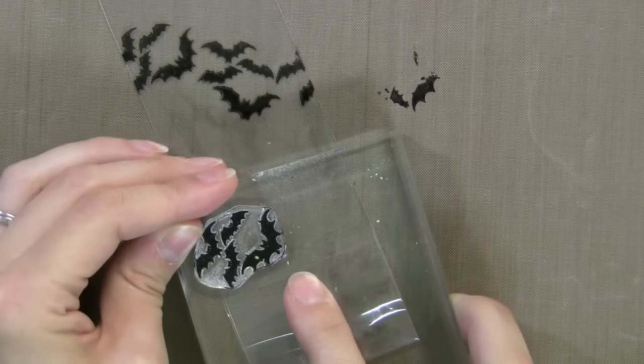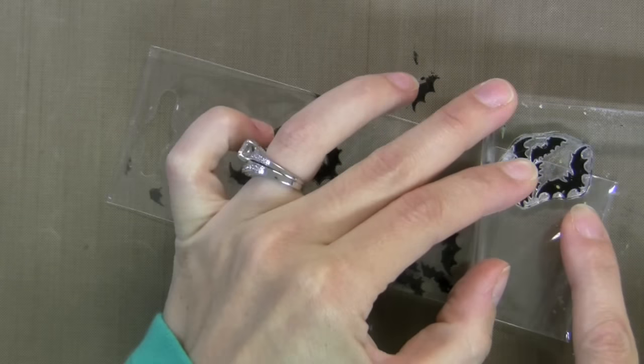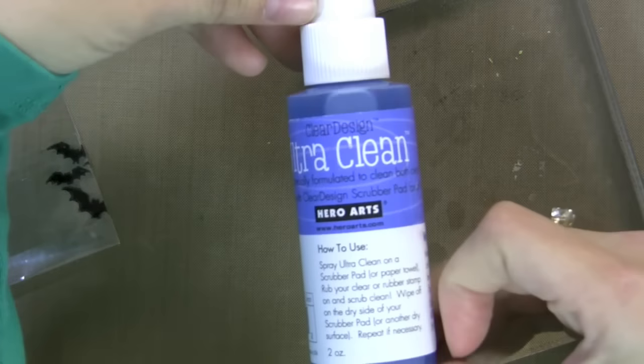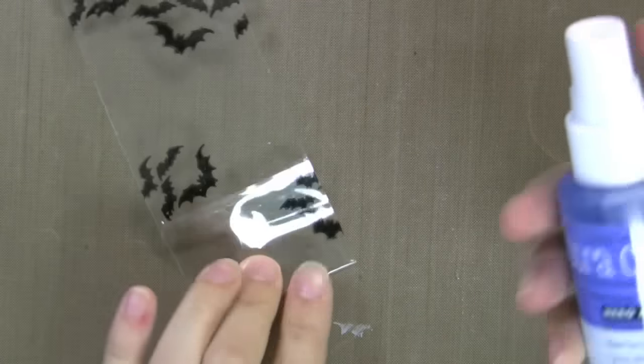Now one of the nice things about Stazon is that our stamp cleaner which is called Ultra Clean will clean this off of anything. Here's the bottle. So if you stamp something somewhere and you want to get the ink off or if your acrylic mount gets a little bit icky you can just spray it with this and it'll take it right off.